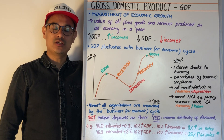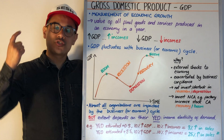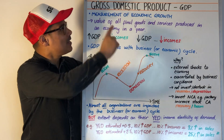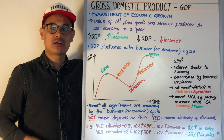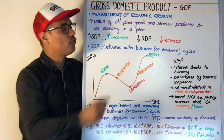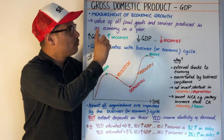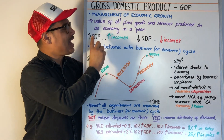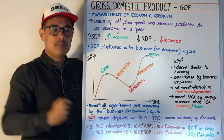Let's have a session on GDP — gross domestic product. GDP is a measurement of economic growth, and the definition is the value of all final goods and services produced in an economy in a year.